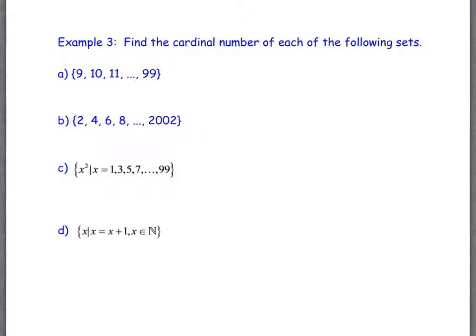So the first one on part A is the cardinal number of the set {9, 10, 11, ..., 99}. So this is telling you that you want all the numbers that start at 9, the whole numbers that start at 9 and end at 99. This is like what we did when we were working with Gauss. How did we find out the number of items in this set?